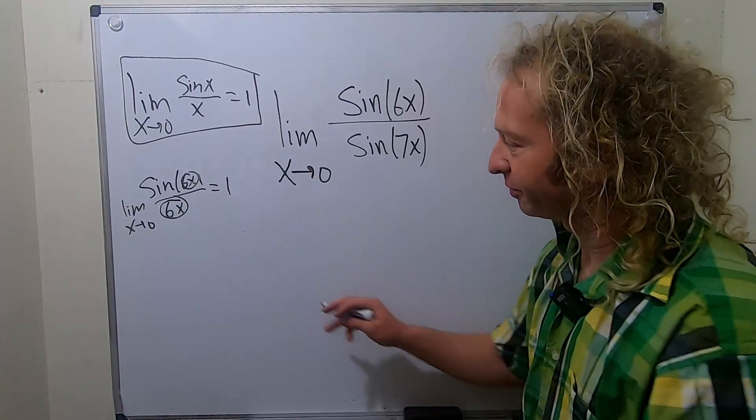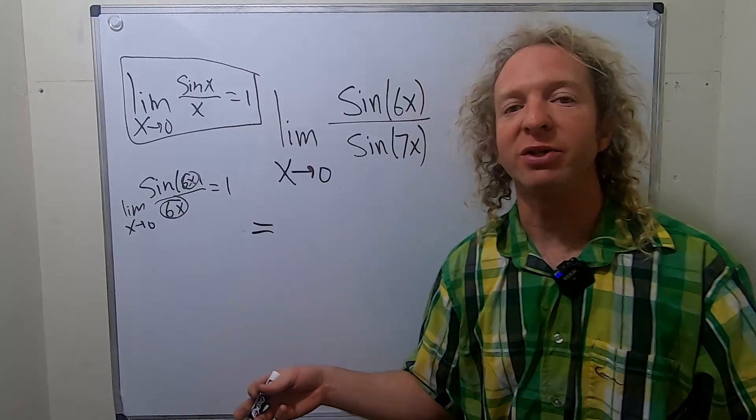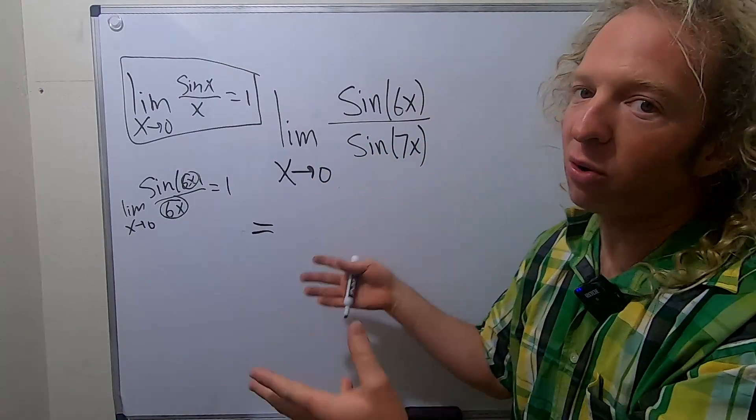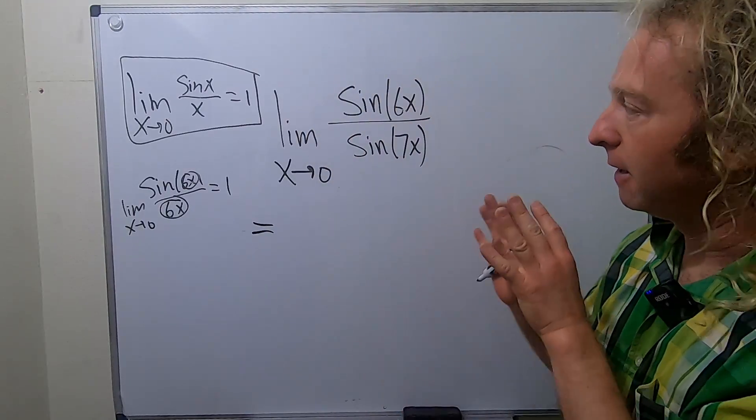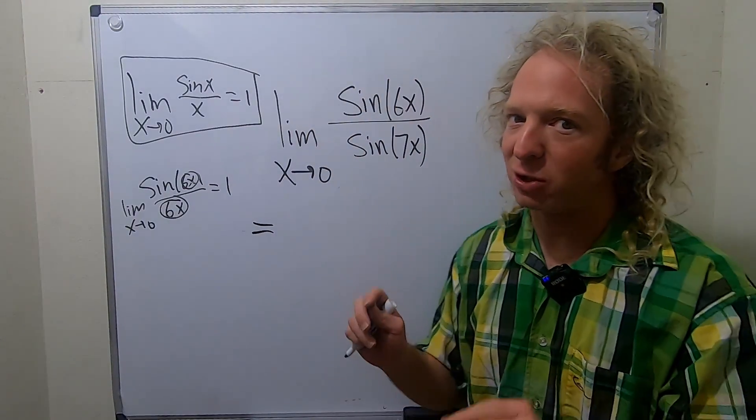So L'Hopital's rule requires more knowledge. So typically when people see this in a calculus 1 course, they don't know about derivatives yet and they don't know about the chain rule. So if you don't know derivatives, this might not make so much sense.